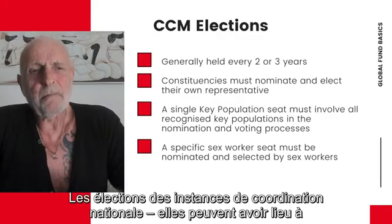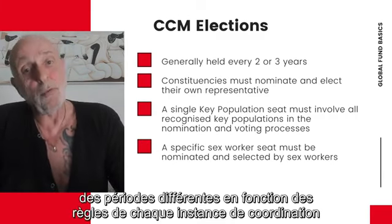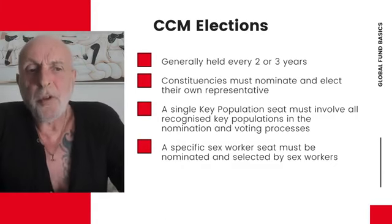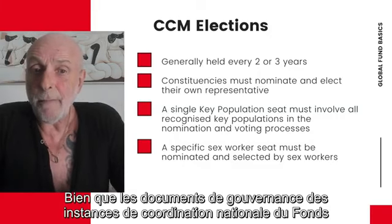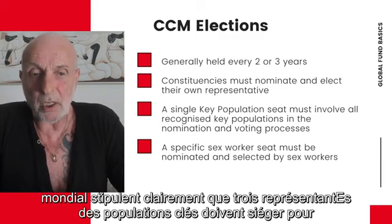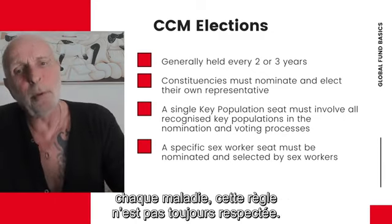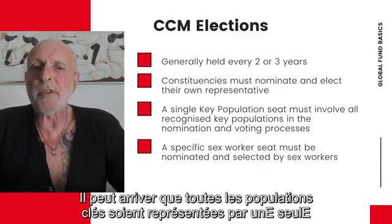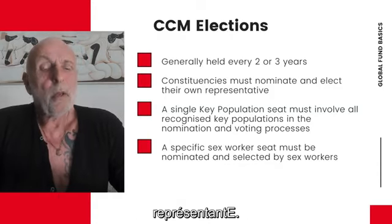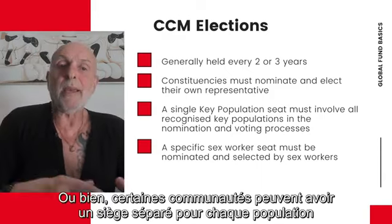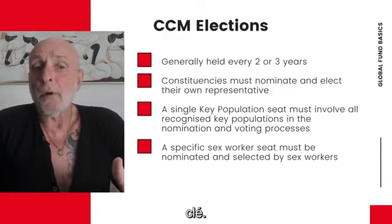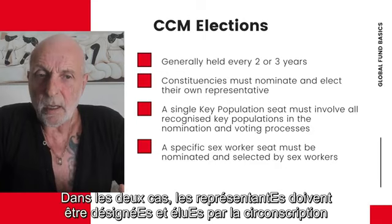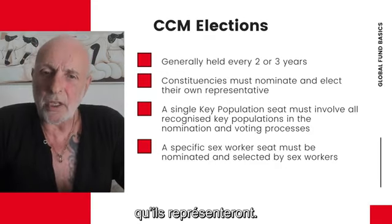CCM elections may happen at different periods depending on the rules of each CCM, but generally every two or three years. Although the Global Fund CCM governance documents state clearly that there should be three key population seats for each disease component, this is not always complied with. Sometimes it may be reduced to a single seat where the representative is there for all key populations, or some communities may have a separate seat for each key population. In both cases, the representatives must be nominated and voted for by the constituency they will represent.